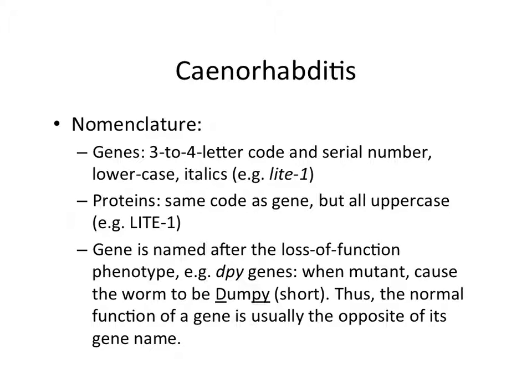Every organism has a sort of internally appointed nomenclature committee, and so it's historical. At some point, everybody that founded these model organisms in terms of their research came up with this, and they did it separately decades ago. The thing that's most useful to remember about C. elegans is how the genes are named.